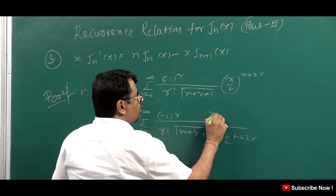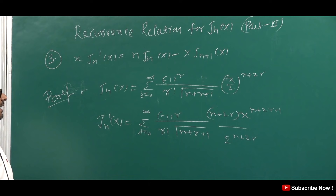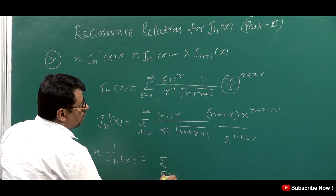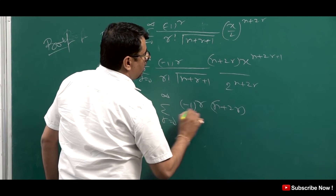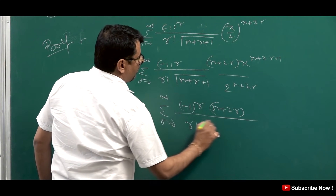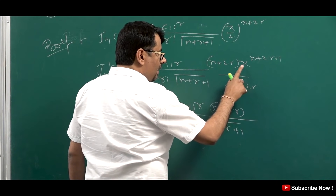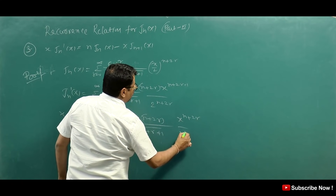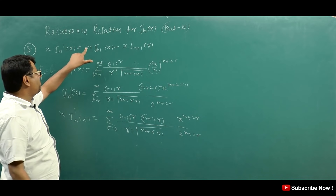So this gives a factor of 2^(n+2r) in the denominator. We will see the terms here. The x power is x^(n+2r), upon 2^(n+2r). So student, here you have to prove one of the recurrence relations. We split the summation: the first part has a factor of n, and the second part has a factor of 2r.